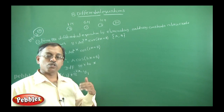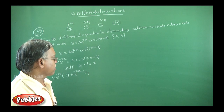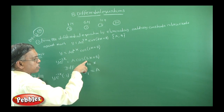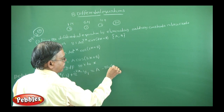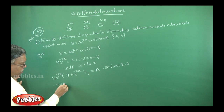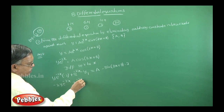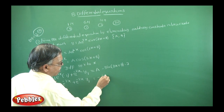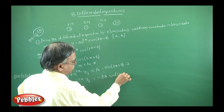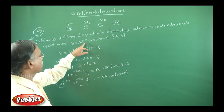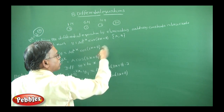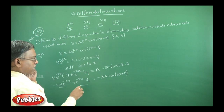After applying the product rule and chain rule, we get: −2y·e^(−2x) + e^(−2x)·y₁ = a·(−sin(3x + b))·3 = −3a·sin(3x + b). Note: e^(3x) in the printed problem is a misprint — it should be e^(2x). There are two arbitrary constants a and b, so I differentiate two times. This is the result after the first differentiation.